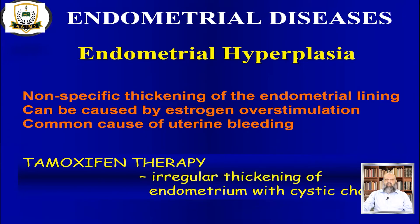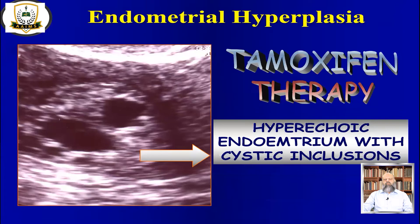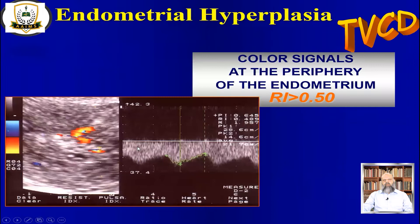In tamoxifen therapy, we can have irregular thickening of the endometrium with cystic changes. This is how it appears — the endometrium is having hyperplasia with cystic areas in it; this was a patient on tamoxifen therapy. When we use transvaginal ultrasound with color Doppler, we can assess the endometrium and its vessels. Here you can see color signals at the periphery of the endometrium; the resistive index is around 0.48. We usually take normal as above 0.50, so in this case it was relatively lower.